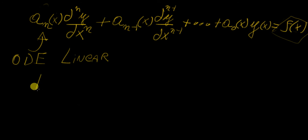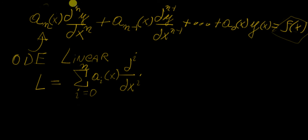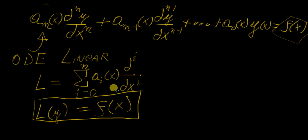We can generalize this further by defining a linear operator, which is essentially the sum of all the functions — using i as a subscript — of the i-th derivatives, from i equals zero all the way to i equals m. The order of the equation is given by the highest order derivative involved. We can then rewrite this as a very compact operator, giving us our most general expression for a linear ordinary differential equation.